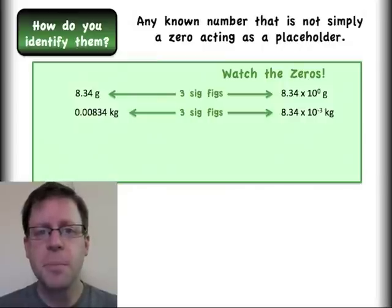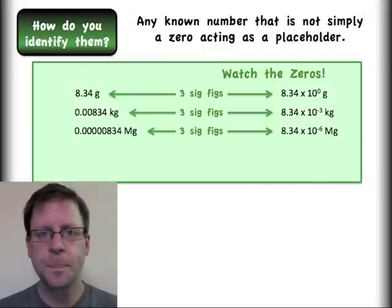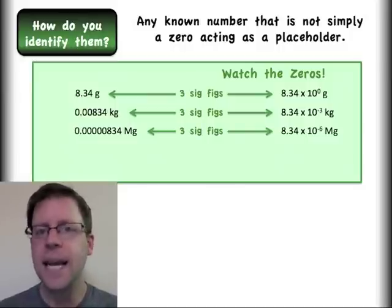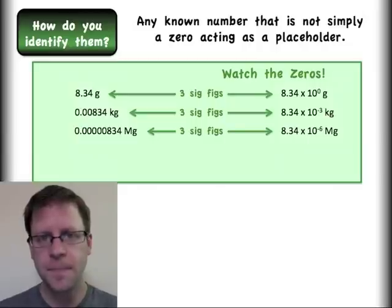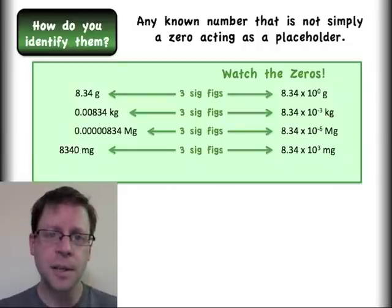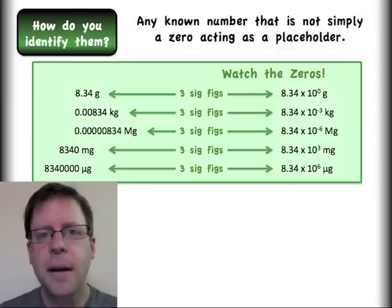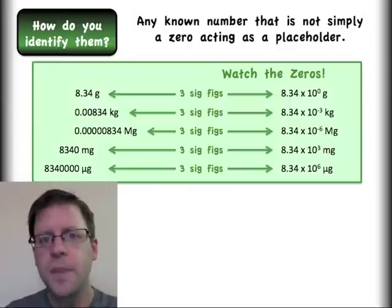Zeros in front of those numbers are simply just placeholders keeping track of the size of the number. I can extend this concept. We're looking at megagrams now. I have more zeros, but I have not gained any number of significant figures. I can go the other direction. Same deal. Look at the standard scientific notation to identify this.